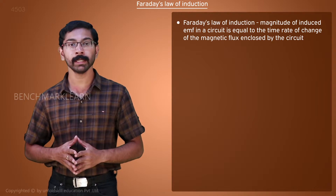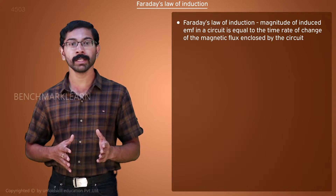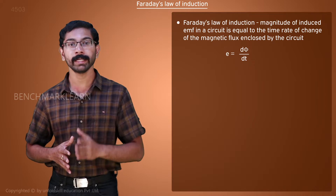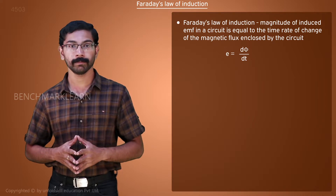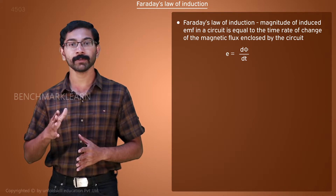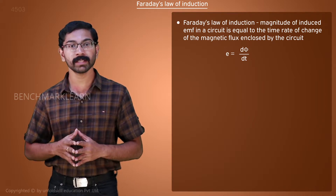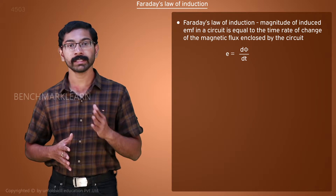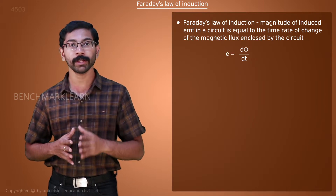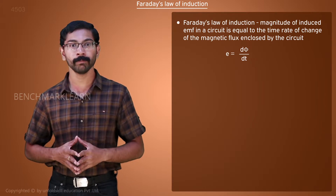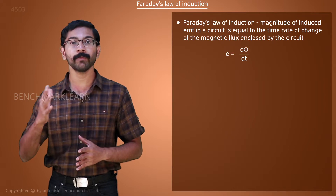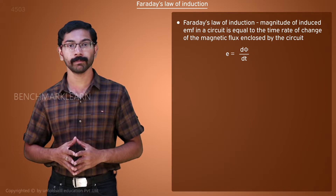Mathematically, induced EMF E is equal to dΦ/dt. This means that if the change in flux is higher, or the change happens during a small interval of time, then a higher EMF is induced across the conductor.